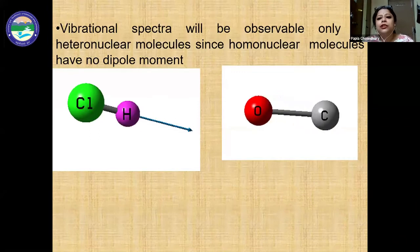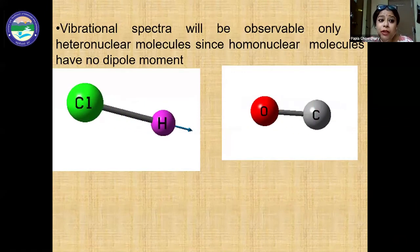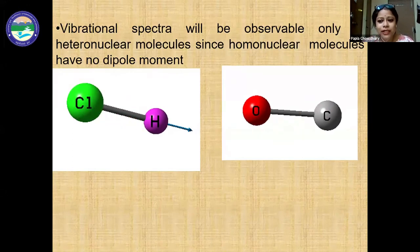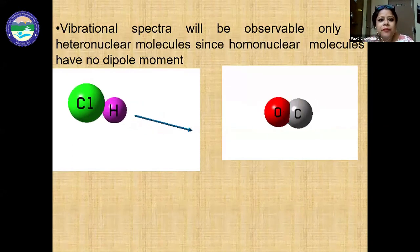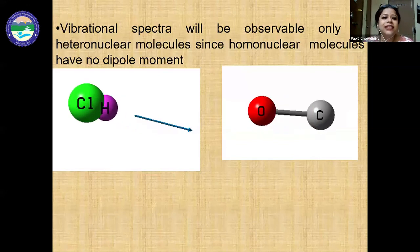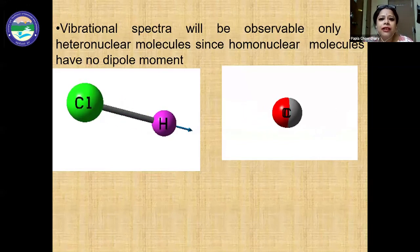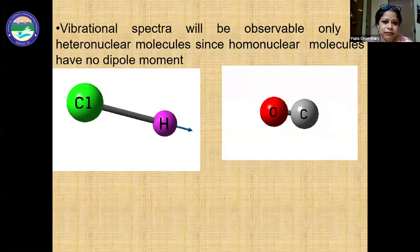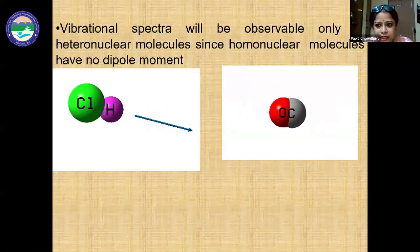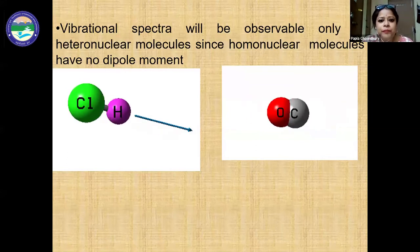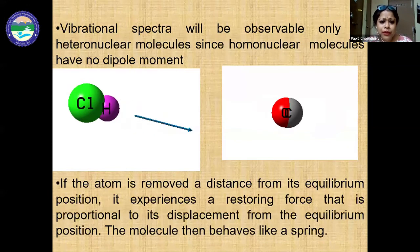The vibrational spectrum will be observable only for those molecules that have a change in dipole moment. If the molecule is heteronuclear in nature — like HCl — they generally have a change in dipole moment and are infrared active. If the molecule is homonuclear in nature, those molecules generally do not show infrared activity.